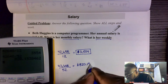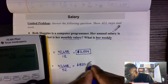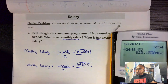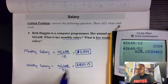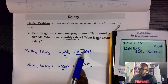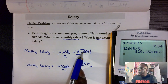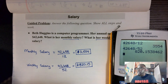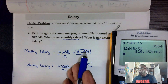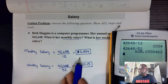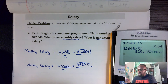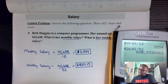Do not get confused and divide the monthly salary by 4 to get the weekly — that is not accurate, as there are not exactly four weeks in every month. You must always go back to the annual salary and divide by the weekly number of periods.